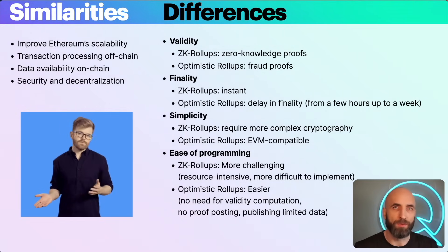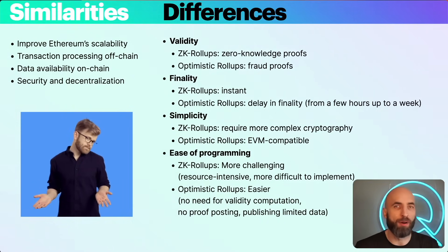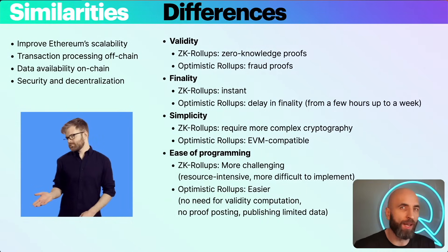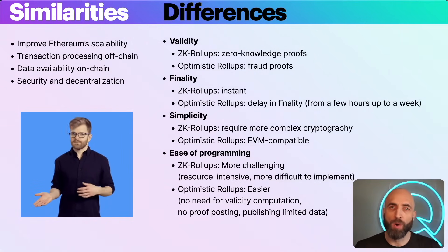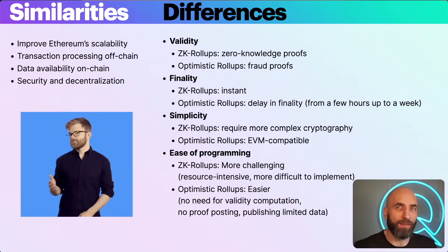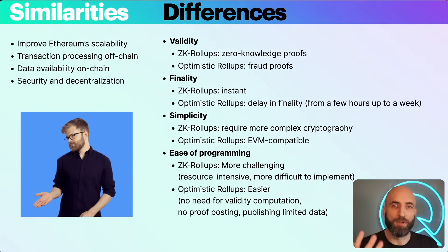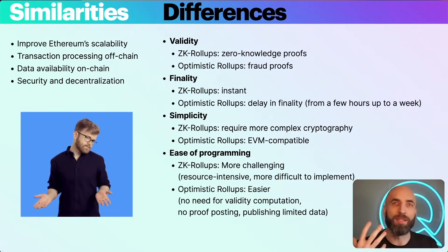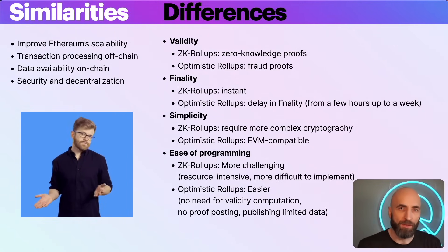Now that we've covered the basics, let's dive deeper into the similarities and differences between ZK rollups and optimistic rollups. For similarities: both improve Ethereum's scalability, both use off-chain transaction processing with on-chain data availability, and both maintain security and decentralization as their core principles.